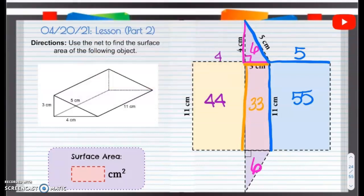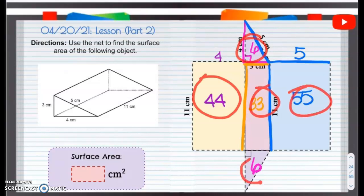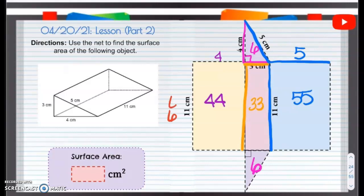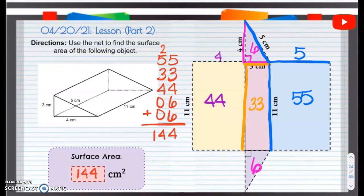Let's add them all up. All I'm doing is finding the area of different shapes and then adding them up. So I have 6. Remember, we have to line them up. And another 6. And we have 44. And we have 33. And we have 55. So I get 144 centimeters squared for this one.